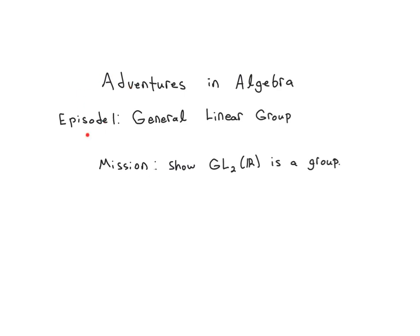Hello mathophiles. This episode of Adventures in Algebra we are going to study the general linear group, and we're going to start the process of showing that it is a group. This is going to be a video in two parts, and of course it's not clear what this means right now, but it's the set of 2 by 2 matrices with nonzero determinant.